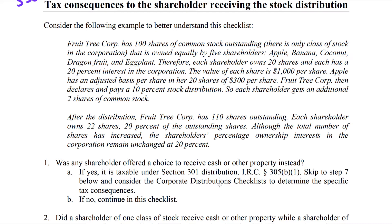The first issue we'll deal with regarding stock distributions is the checklist that focuses on the shareholder. I have an example to better understand this checklist. Fruit Tree Corporation has 100 shares of common stock outstanding — only one class of stock, which means this common stock has voting rights by its nature. The 100 shares are owned equally by five shareholders: Apple, Banana, Coconut, Dragon Fruit, and Eggplant — or simply A, B, C, D, E to simplify analysis.